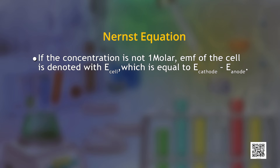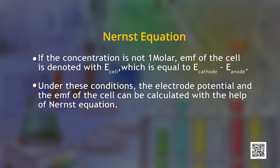We also need to find a way to calculate the electrode potential when the concentration of electrolyte is not 1 molar. If the concentration is not 1 molar, the EMF of the cell is denoted as E cell, which is equal to E cathode minus E anode, or we can also say E cell is equal to E right minus E left. Under these conditions, the electrode potential and the EMF of the cell can be calculated with the help of the Nernst equation.